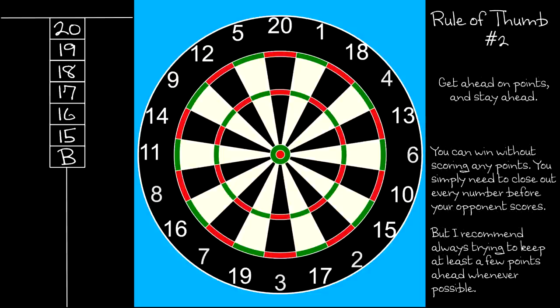My second rule of thumb is get ahead on points and stay ahead. Another way of saying this is, if you are behind on points, do not use darts trying to close out your opponent's scoring numbers until you have gained the points lead. Now you can win without scoring a single point. To do so, you must close every number before your opponent can score. I've seen it done, but I don't recommend it as a typical strategy, and here's why.